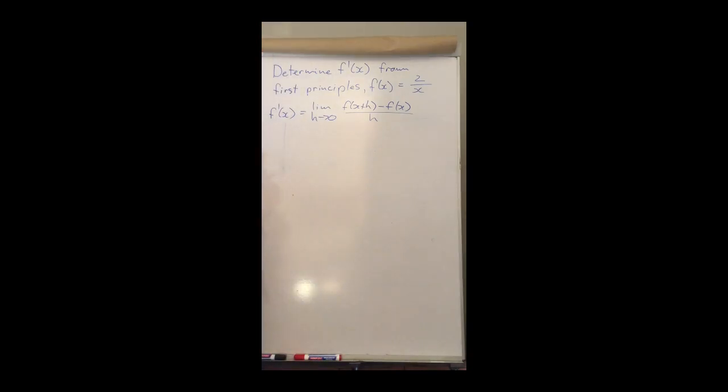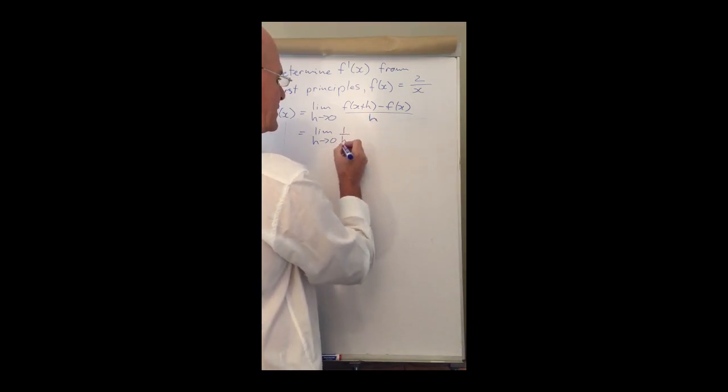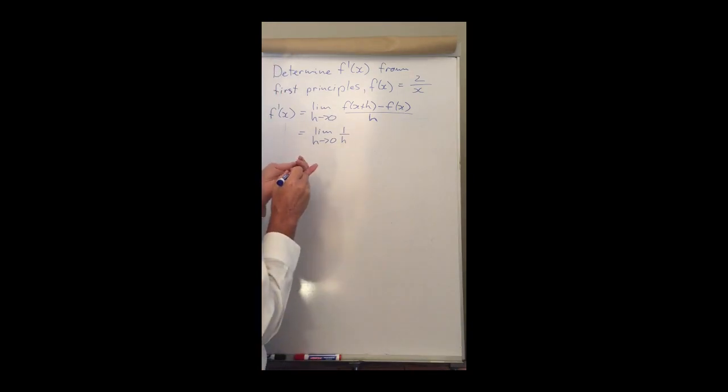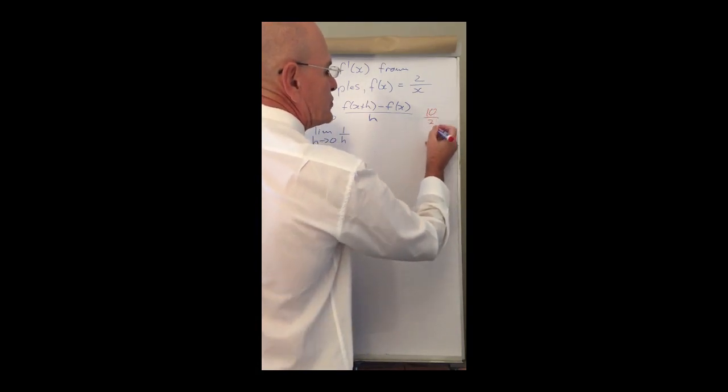So let's substitute and see what we get. We have the limit where h approaches 0, and what I'm going to do is write this divided by h as 1 over h. Remember I'm allowed to do that because if I have 10 over 2, that is actually equal to a half times 10.